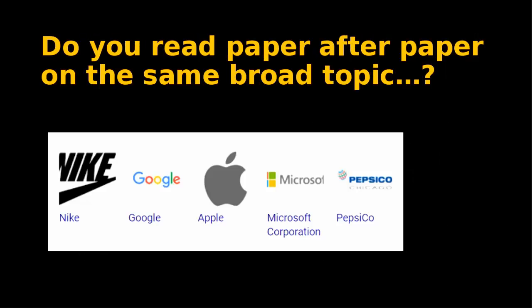I want to look at the reasons why students might do this and think about strategies that instructors, librarians, and course managers can use to help students feel permission to choose a personally meaningful topic for their papers and projects. One thing I see working with management programs is students choosing to analyze a huge company such as Apple or Nike, when it would be much better if they chose something that really reflected where they are in their career or the industry they want to go into.